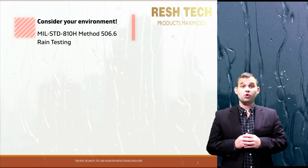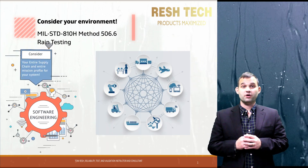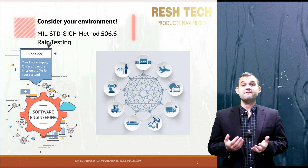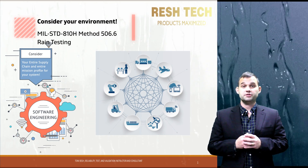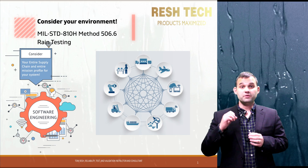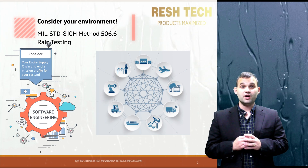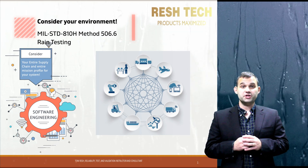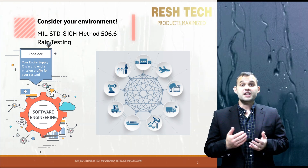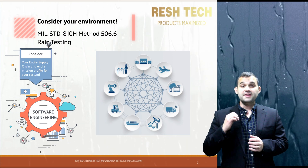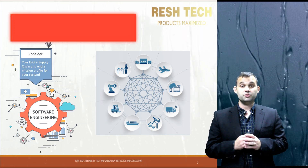Even if your system is deployed in an arid climate with minimal rain, you still need to consider the entire mission profile, which includes logistics, supply chain, and inventory storage — and not only the deployment aspect. Exposure to rain could occur while stored outside at a storage facility or exposed to rain on an open bed truck. When planning your mission profile and test cases for MIL-STD-810H testing, consider your system's entire lifecycle and supply chain for potential stresses such as rain.